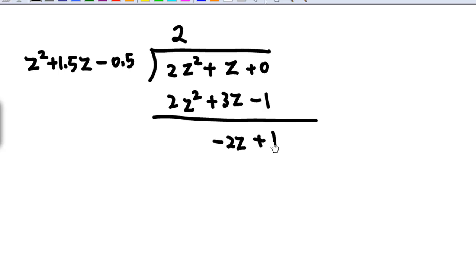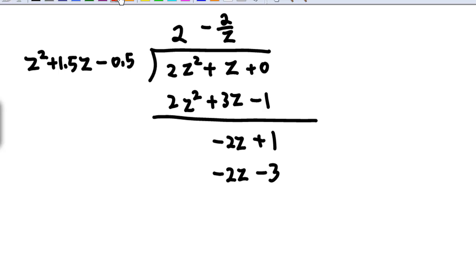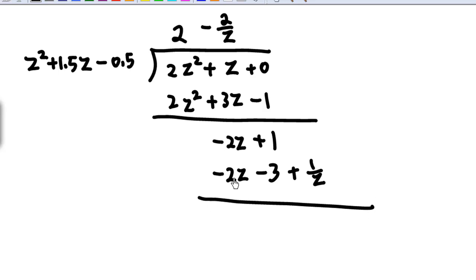Next, I need to get minus 2Z from Z squared, so I multiply by minus 2 over Z. Minus 2 over Z times Z squared gives minus 2Z; minus 2 over Z times 1.5Z gives minus 3; minus 2 over Z times minus 0.5 gives 1 over Z. After subtraction: minus 2Z subtract minus 2Z is 0; 1 minus minus 3 becomes 4; and 0 minus 1 over Z gives negative 1 over Z.